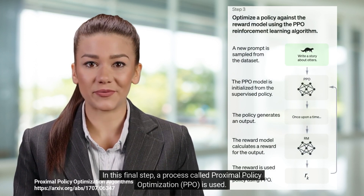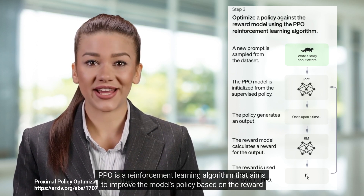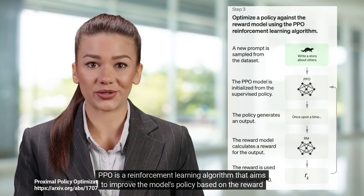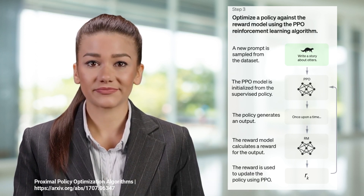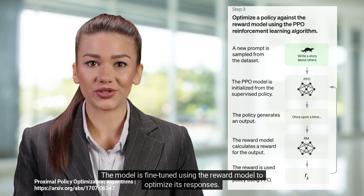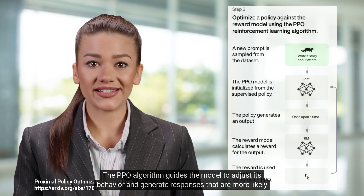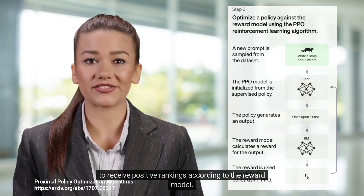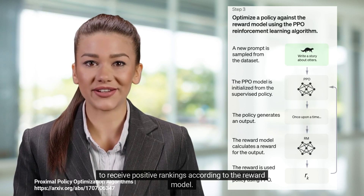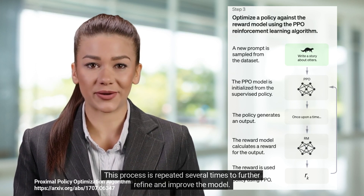In this final step, a process called Proximal Policy Optimization, or PPO, is used. PPO is a reinforcement learning algorithm that aims to improve the model's policy based on the reward model created in step 2. The model is fine-tuned using the reward model to optimize its responses. The PPO algorithm guides the model to adjust its behavior and generate responses that are more likely to receive positive rankings. This process is repeated several times to further refine and improve the model.